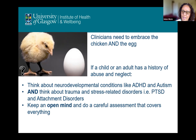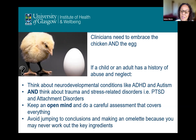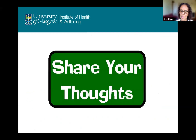As a clinician, it's important to embrace both the chicken and the egg: if a child or adult has a history of abuse and neglect or trauma, we should think about neurodevelopmental conditions and also think about trauma and stress-related disorders like post-traumatic stress disorder and attachment disorders. Keep an open mind and do a careful assessment that covers everything. Unfortunately, we tend to stop with what we find first and jump to conclusions — we must avoid making an omelette, because if you do that, you might never work out what the key ingredients were.